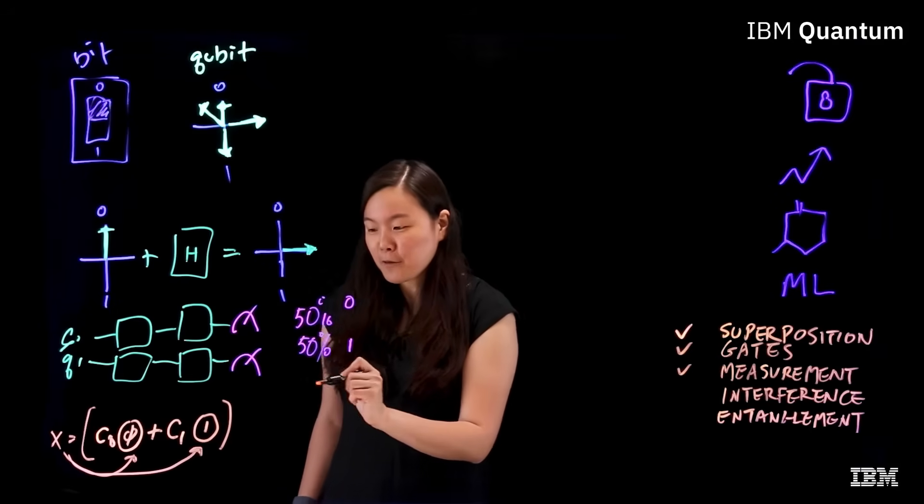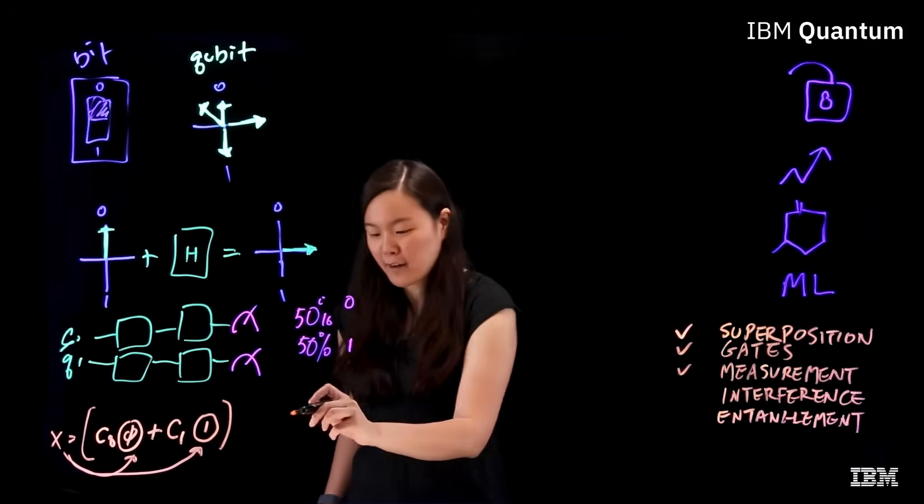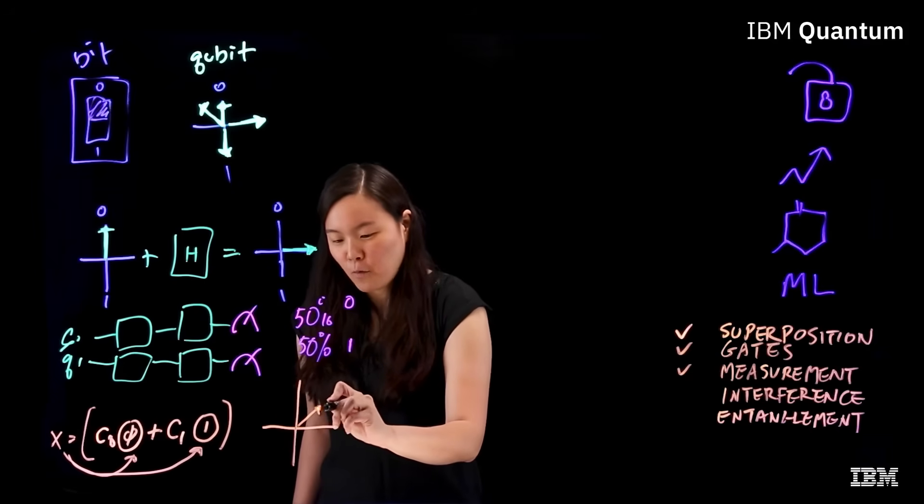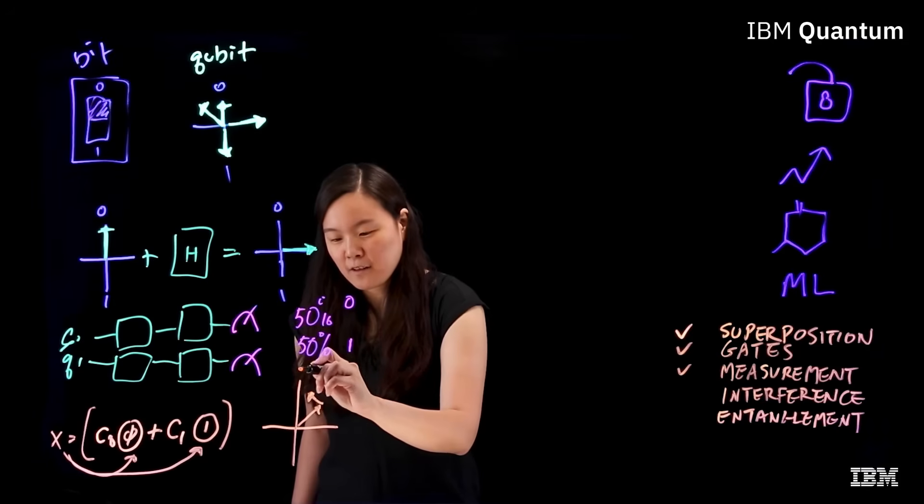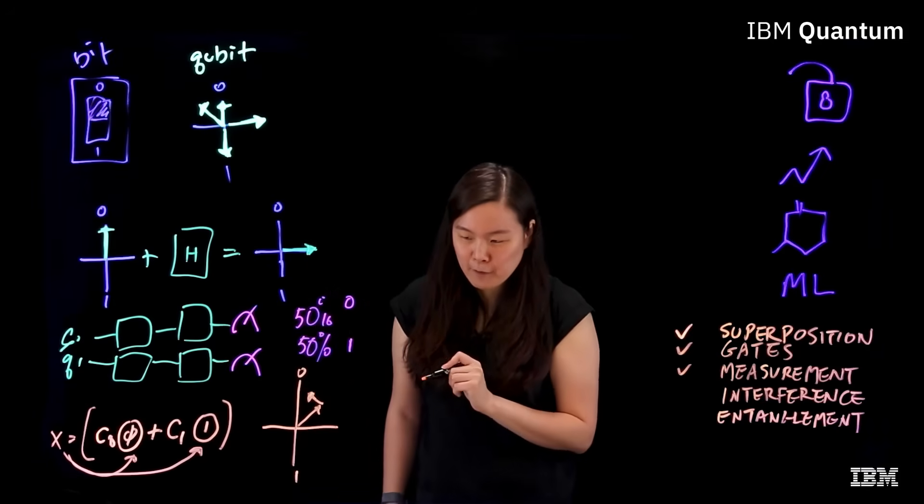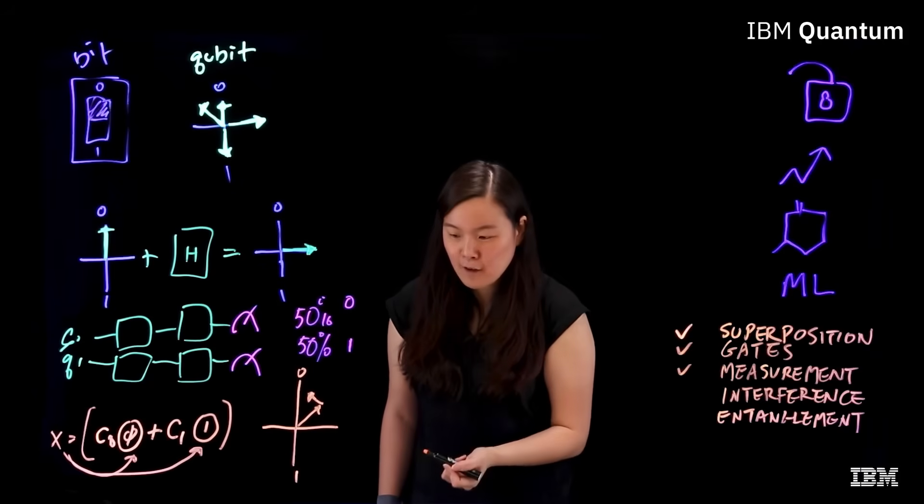And to make sure the single answer we get is the correct one, quantum gates need to be arranged in a way so that it would amplify the correct answer and cancel all the incorrect ones, a process called interference.